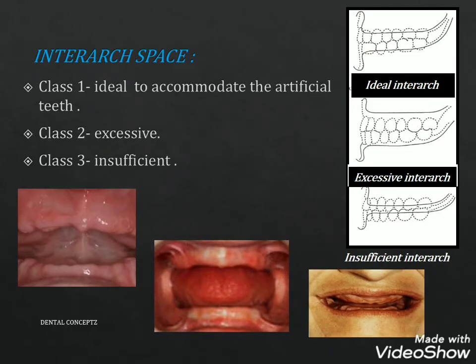For interarch space, Class 1 is ideal to accommodate the artificial teeth. Class 2 has excessive interarch space, and Class 3 has insufficient interarch space.